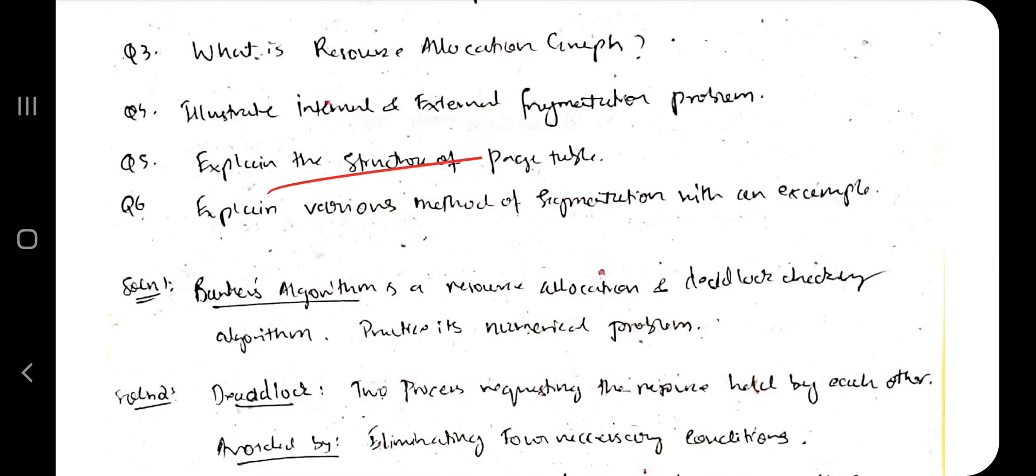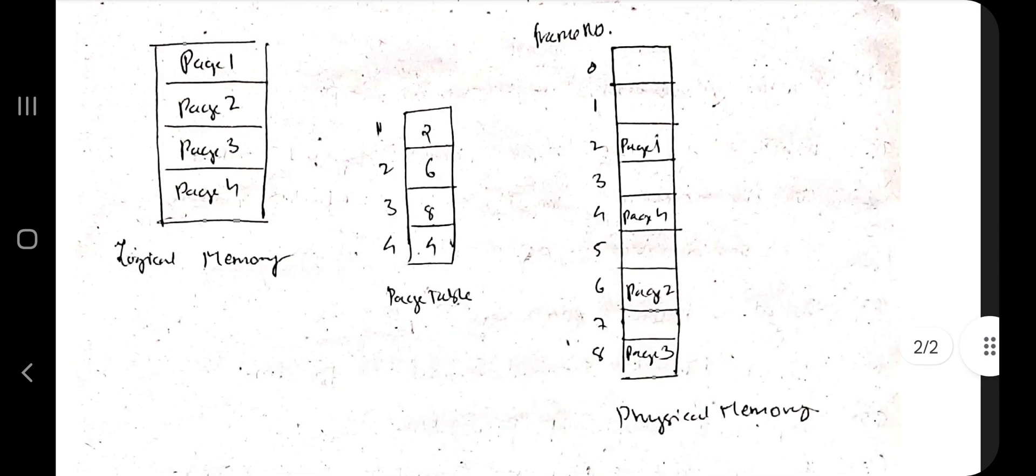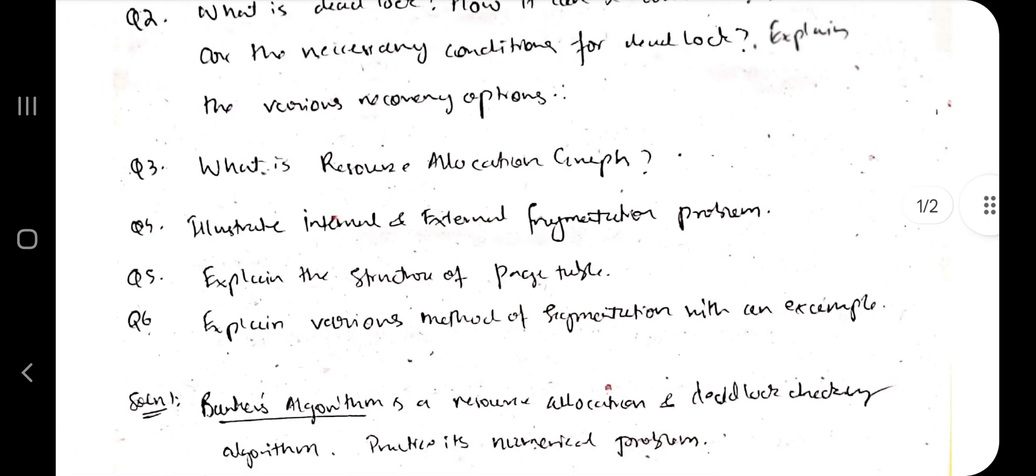Next question is explain the structure of page table. So what is a page table? A page table is basically a table connecting logical memory and the physical memory. So page one, page two, page three, page four - where are these present? Those addresses are stored in page table. So this will be a map to the page of physical memory. You just have to make that and make sure you include the key points.